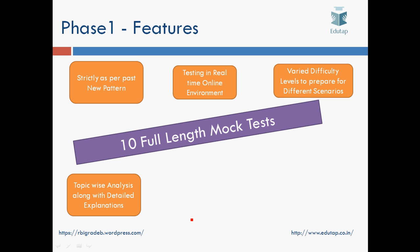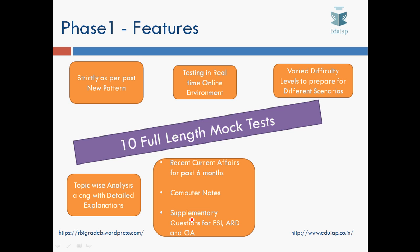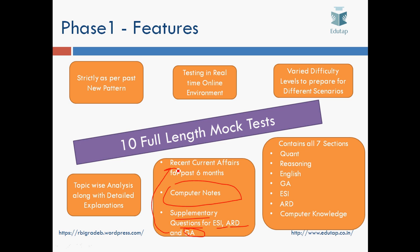The context is that the NABARD exam last year was very easy, which can be gauged from the cut-offs: 112 for Grade A and 122 for Grade B. But this year we expect a slightly more difficult exam, especially in the Quant and Reasoning sections. So we will be giving mock tests with varied difficulty levels. There would be topic-wise analysis after you attempt the test, along with detailed explanations, so you can identify your strong and weak areas. There would also be computer notes to supplement your preparation, along with supplementary notes and questions on ESI and ARD, and supplementary questions on the GA part based on recent current affairs for the past 6 months. Our tests contain all 7 sections: Quant, Reasoning, English, GA, ESI, ARD, and Computer Knowledge.